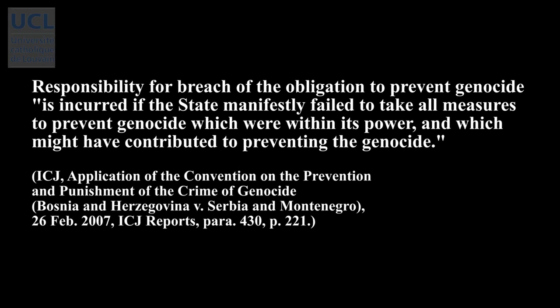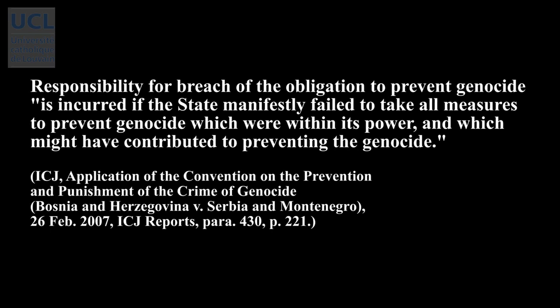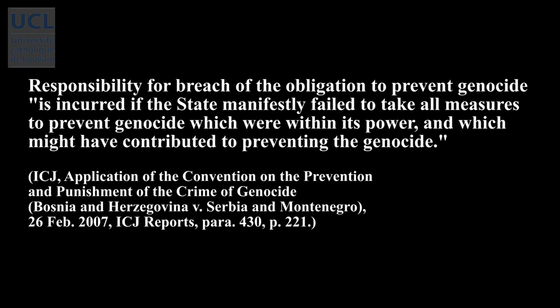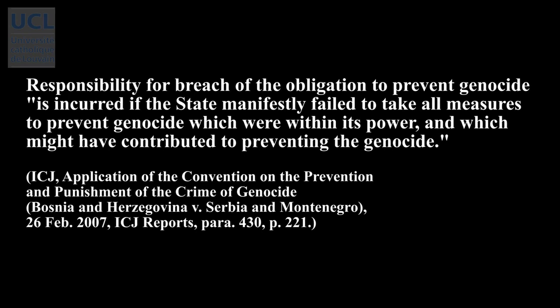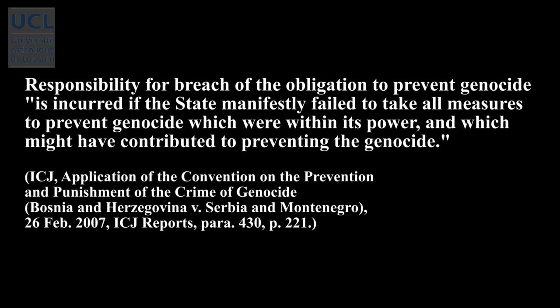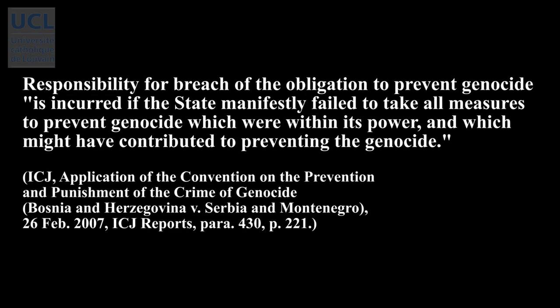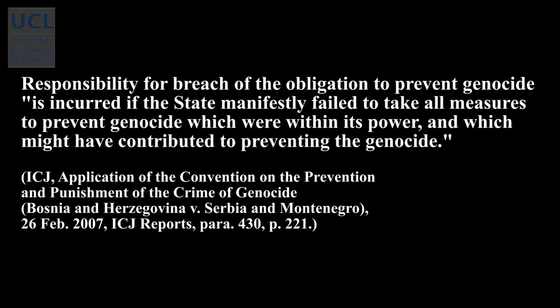As the ICJ put it in the case between Bosnia-Herzegovina and Serbia concerning the application of the Convention on the Prevention and Punishment of the Crime of Genocide: 'Responsibility for breach of the obligation to prevent genocide is incurred if the state manifestly failed to take all measures to prevent genocide which were within its power and which might have contributed to preventing the genocide.' The yardstick to assess the state's conduct is whether it acted with due diligence, which calls for an assessment in concreto.